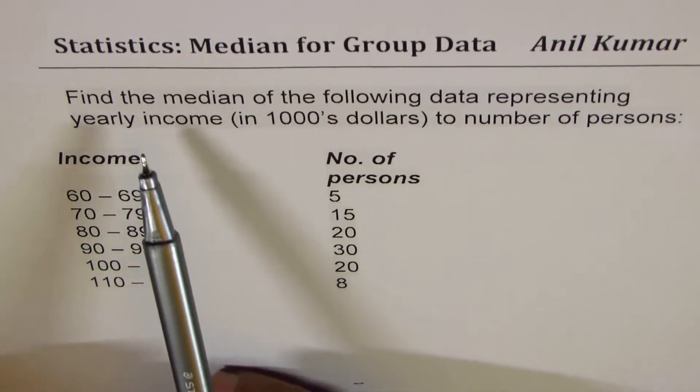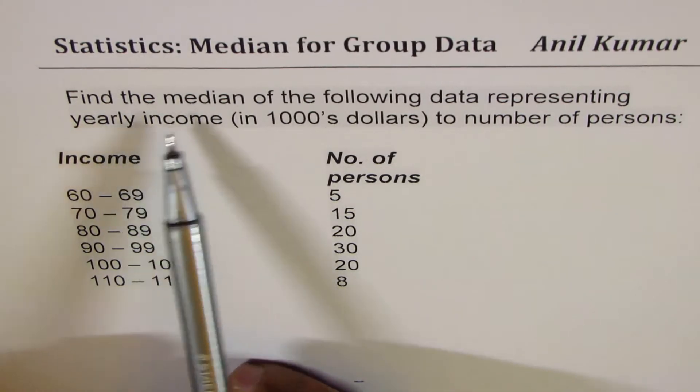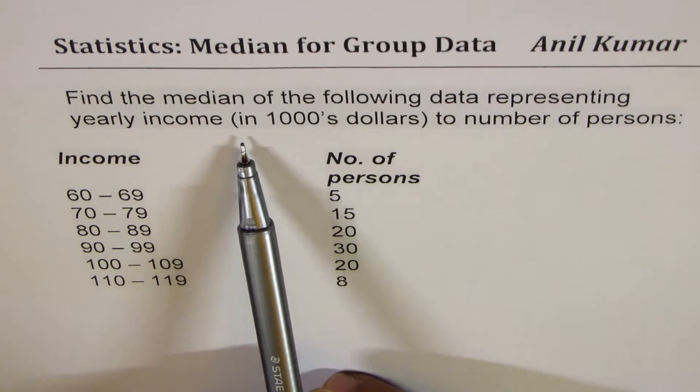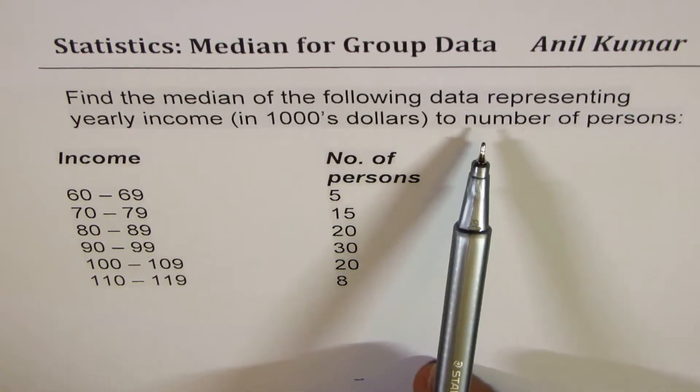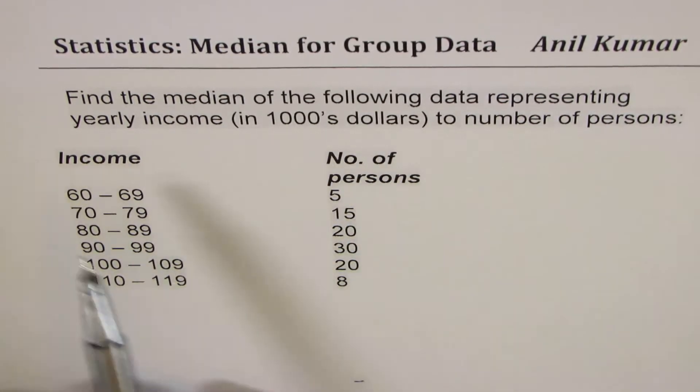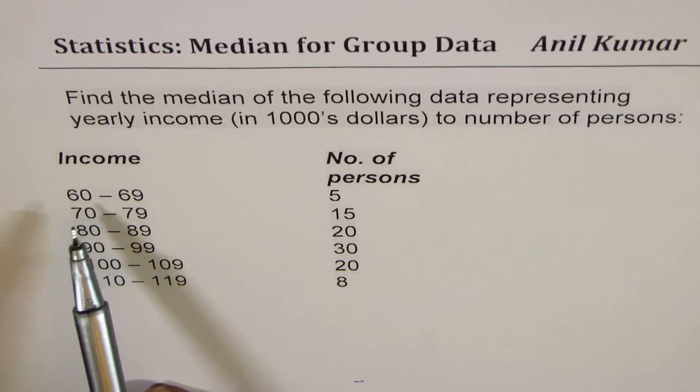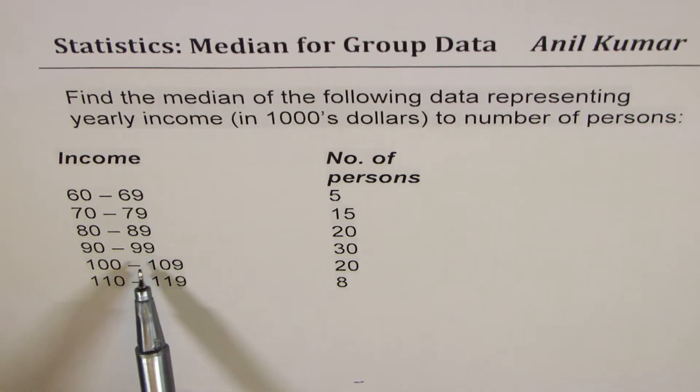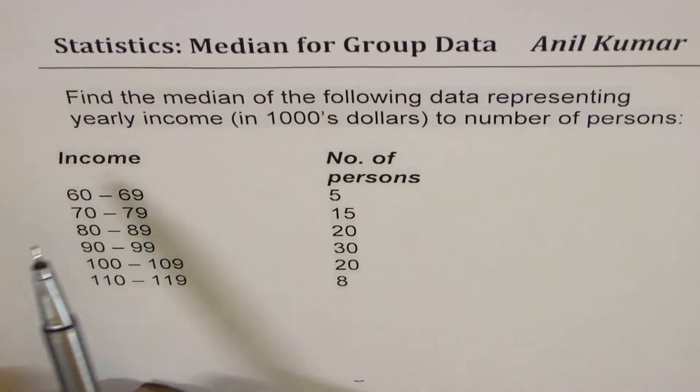The question here is find the median of the following data representing yearly income in thousands of dollars to number of persons. Income is given here in the interval 60 to 69, 70 to 79, 80 to 89, 90 to 99, 100 to 109, 110 to 119 thousands of dollars per year.